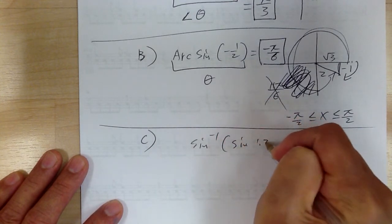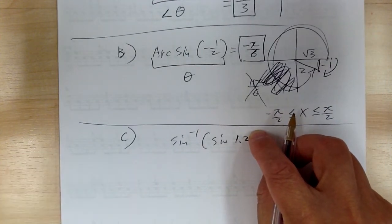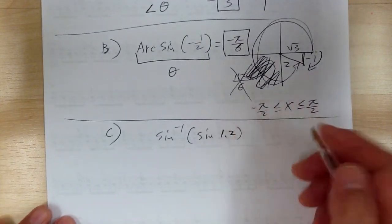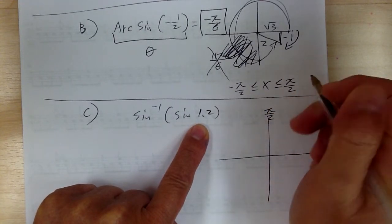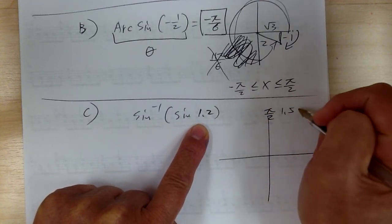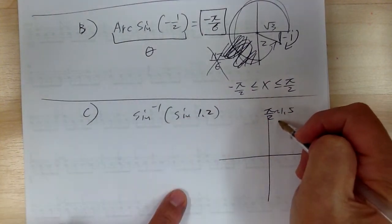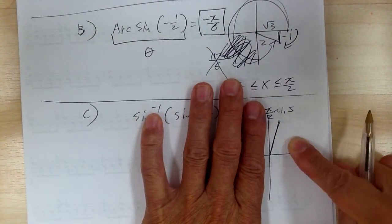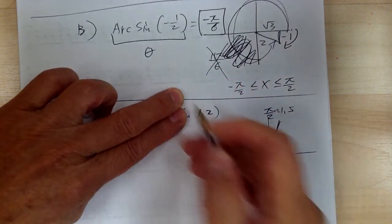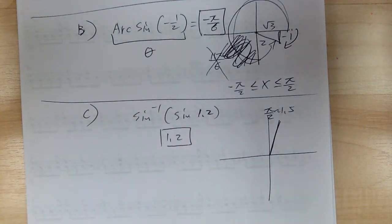Example 1C: inverse sine of sine of 1.2 radians. You first have to check whether it's within the limit. Pi over two is about 1.5 radians, and 1.2 radians is within that boundary. Once it's within the boundary, the inverse and the function cancel out, so the answer would be 1.2. Inverse means they are the opposite of each other, so they cancel out.